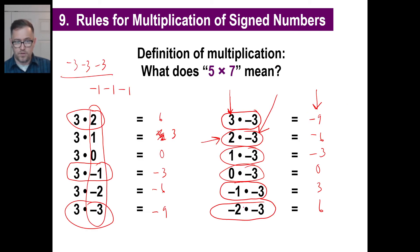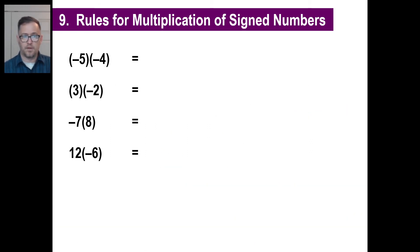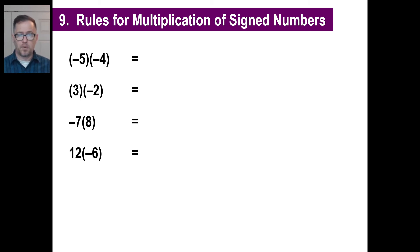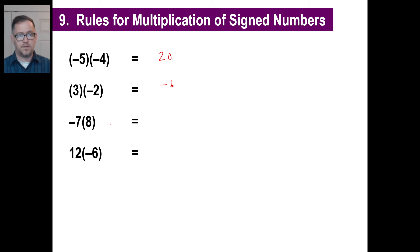The other part: if two factors have the opposite sign, the product is negative. We've already seen examples of this — one positive, one negative, the answer is negative. That's all you need to remember. So: negative 5 times negative 4, same signs, the answer is positive 20. 3 times negative 2, opposite signs, the answer is negative 6. Negative 7 times 8, also opposite signs, so also negative. 12 times negative 6, opposite signs, the answer is negative 72.